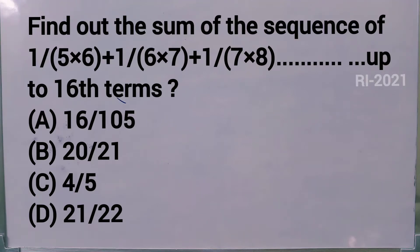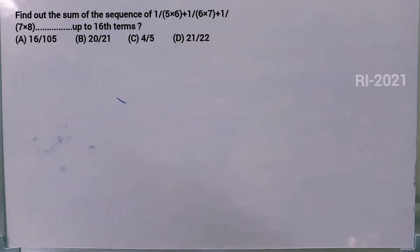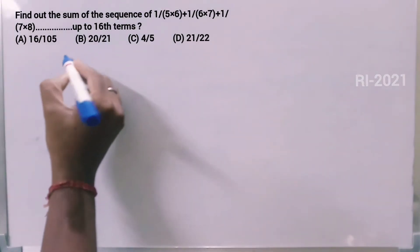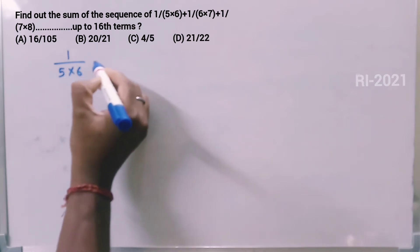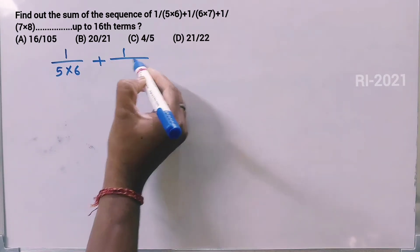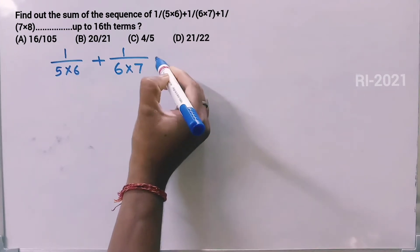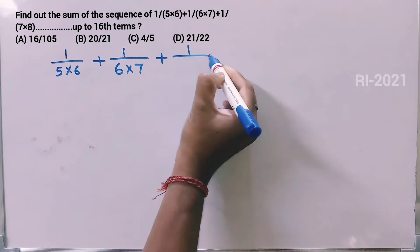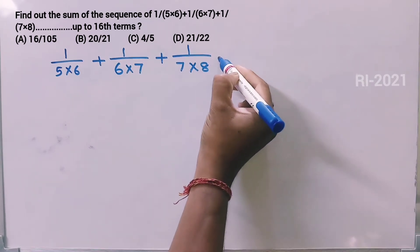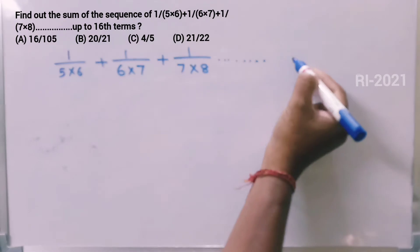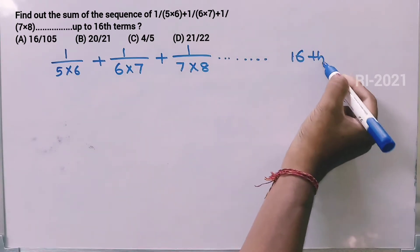Find the sum of the sequence: 1/(5×6) + 1/(6×7) + 1/(7×8) up to 16 terms.